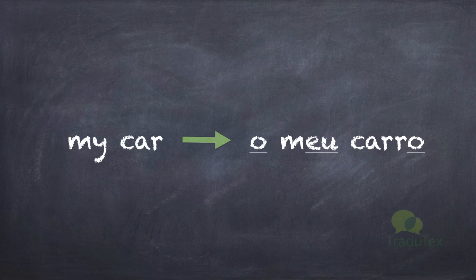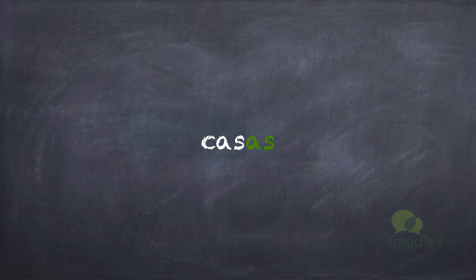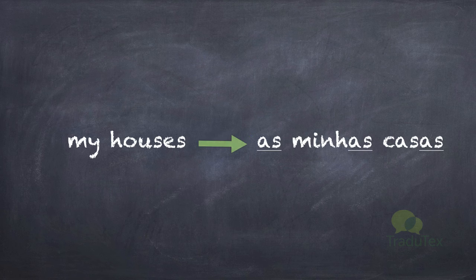The same logic applies if we need to translate 'my houses'. We've seen before that 'casa' is 'house'. The plural 'houses' is 'casas', with A-S at the end — A because it's feminine, S because it's plural. So if I need to say 'my houses', I say as minhas casas.